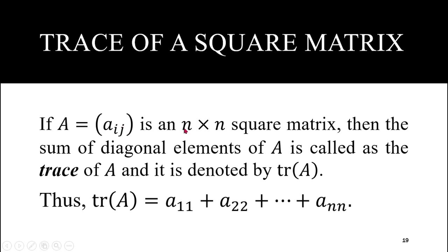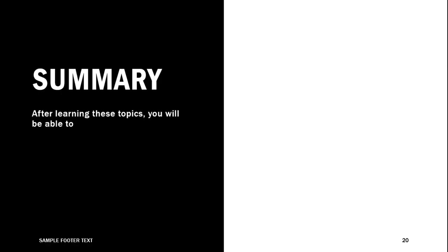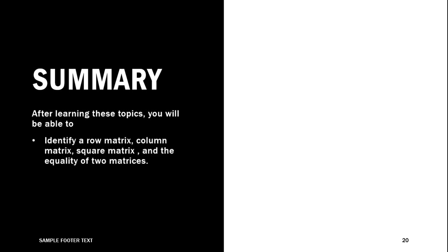Trace of a square matrix: if A = [a_ij] is an n×n square matrix, then the sum of the diagonal elements of A is called the trace of A, denoted as tr(A). The diagonal elements are a_11, a_22, a_33, up to a_nn, and the trace of A is therefore a_11 + a_22 + ... + a_nn — the sum of all diagonal elements of the square matrix.